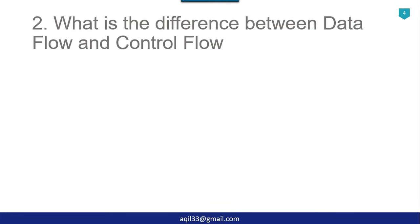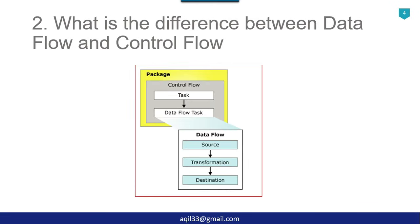A very popular question that is normally asked is: what is the difference between data flow and control flow? Data flow defines the flow of data from source to destination. In data flow we have three types of components — first we have sources from where we can read the data, then we have transformations where we optionally can transform the data before inserting it into the destination, and finally we have the destination where we can insert our data.